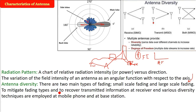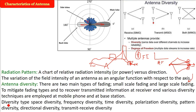Multipath fading and Doppler shift are key problems. To address these, we place multiple antennas — whichever is getting good signal strength, that antenna's input will be used. The diversity types are space diversity, frequency diversity, time diversity, polarization diversity, pattern diversity, directional diversity, and transmit-receive diversity. In 5G, we use MIMO — multiple input, multiple output — where multiple transmitters and multiple receivers are there, allowing focused signal communication.